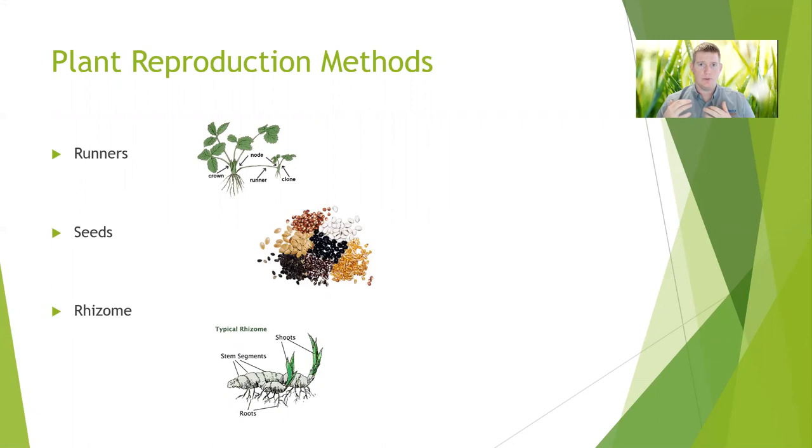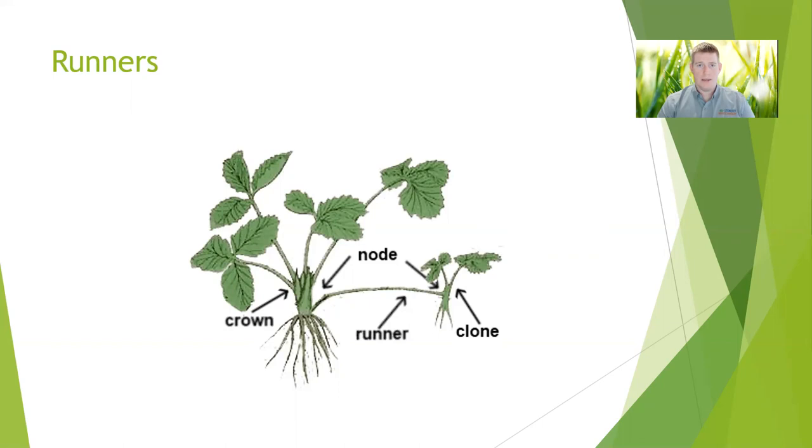These three reproduction methods are what we deal with the most, and those are runners, seeds, and rhizomes. We're going to skip over seeds, assuming that you have a base understanding of how seed reproduction works.